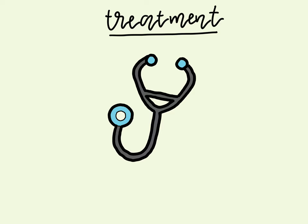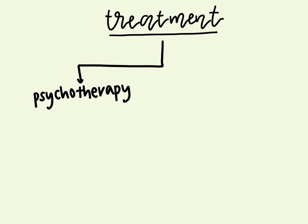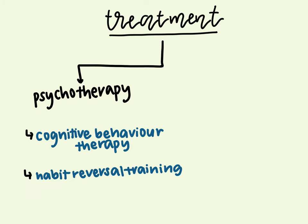Obsessive compulsive disorder treatment may not result in a cure, but getting treatment as soon as possible may help prevent OCD from worsening and disrupting more activities in your daily routine. Treatment often involves psychotherapy, medication, or a combination of both. Psychotherapy can be an effective treatment for adults and children with OCD. Certain types including cognitive behavior therapy and other related therapies such as habit reversal training can be as effective as medication for many individuals.